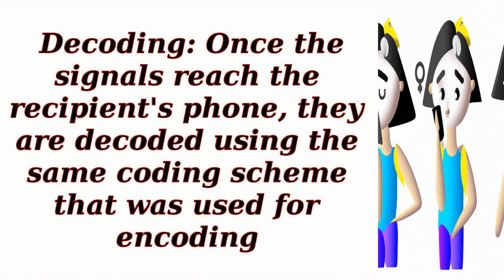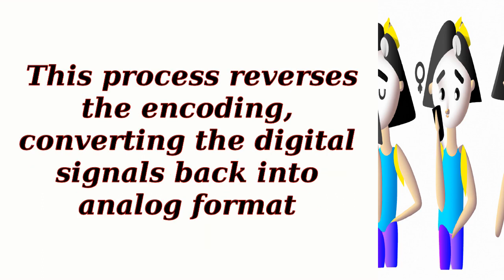Once the signals reach the recipient's phone, they are decoded using the same coding scheme that was used for encoding. This process reverses the encoding, converting the digital signals back into analog format.